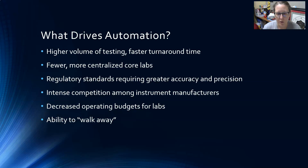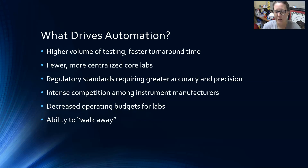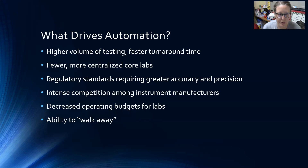Automation has also led to fewer, more centralized core labs, especially for reference testing. These are the big send-out labs like Quest, American Esoteric, and LabCorp here in the U.S., and similar labs exist worldwide. The advantage of centralized core labs is that they receive a large volume of samples from an entire region, which allows them to achieve a lower cost per test. If a test is too expensive to bring into a local clinical lab, the advantage is to use a reference lab, which saves money and lowers the cost of healthcare.